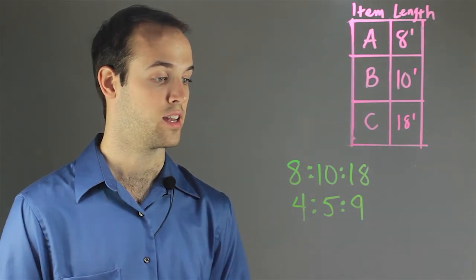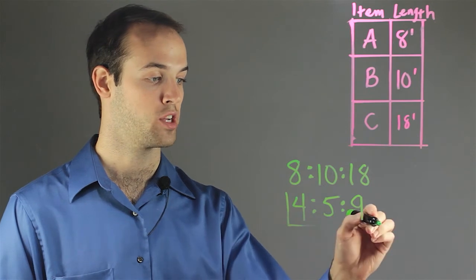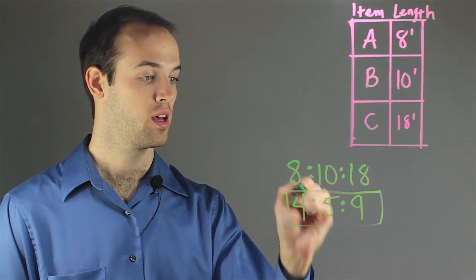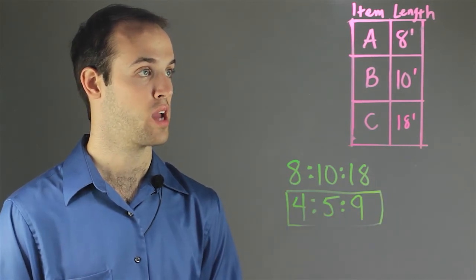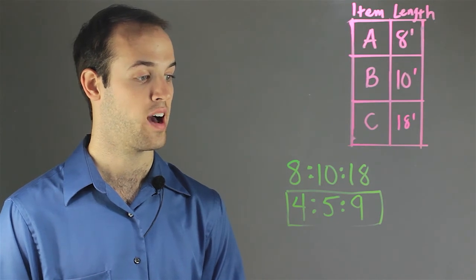And now I can see that the numbers have no more common factors, which means that the ratio is in lowest terms. So the ratio of these three objects is 4 to 5 to 9.